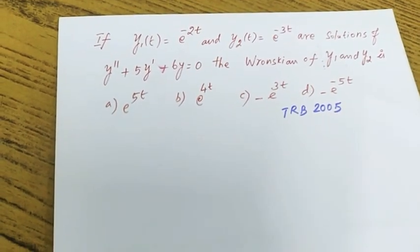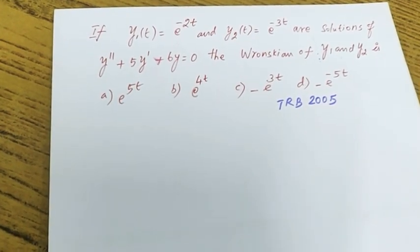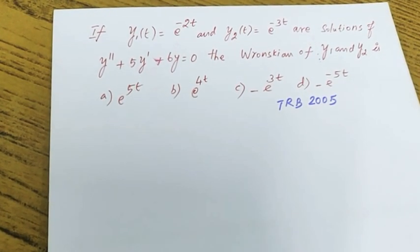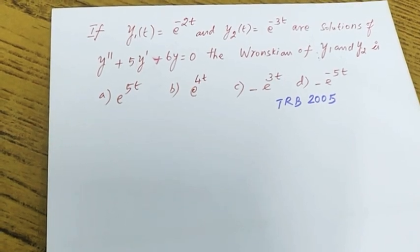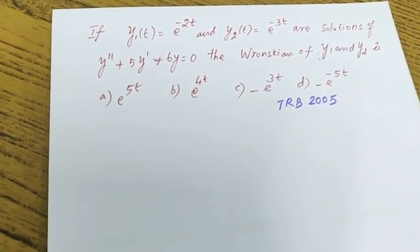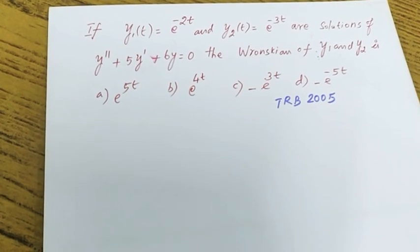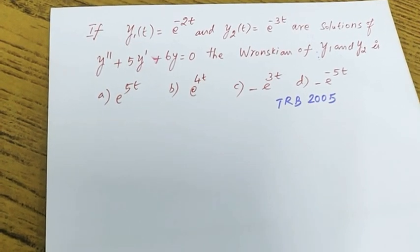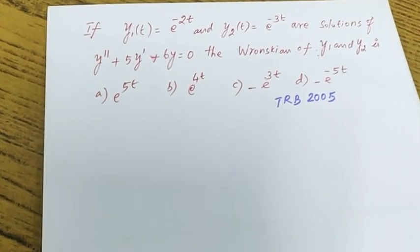Welcome to Kamal Online Max. 2005 TRB — Differential Equations area where you are going to get a Wronskian related question.